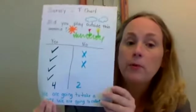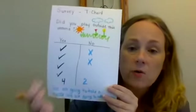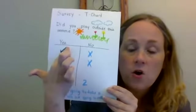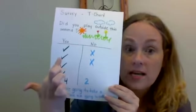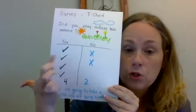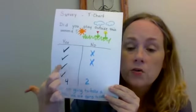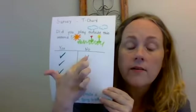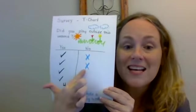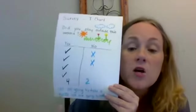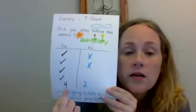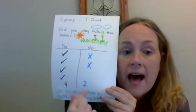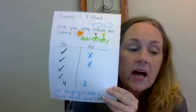How many people were surveyed — how many people did we ask the question? We can count them: one, two, three, four, five, six. And when we look at the two numbers at the bottom, they should add up.